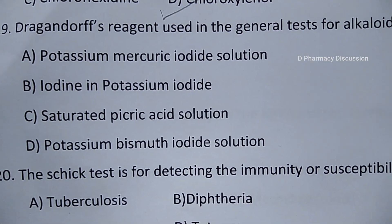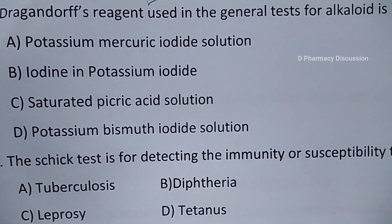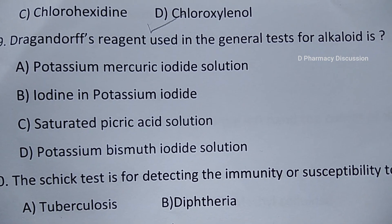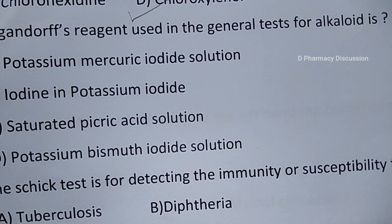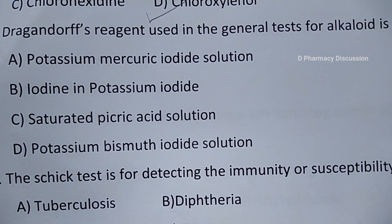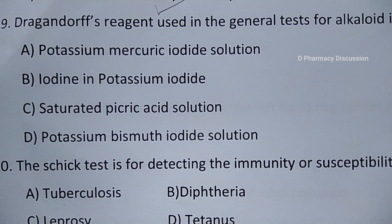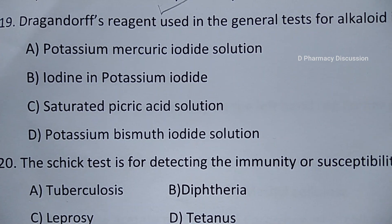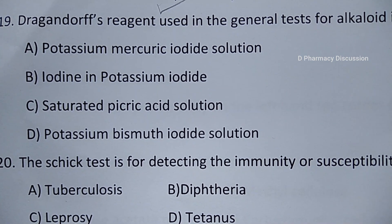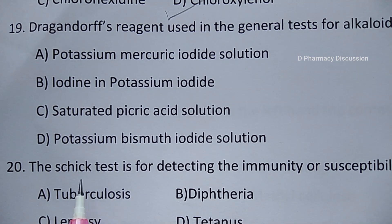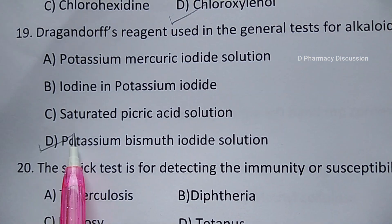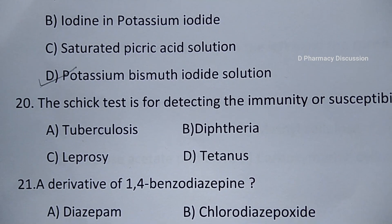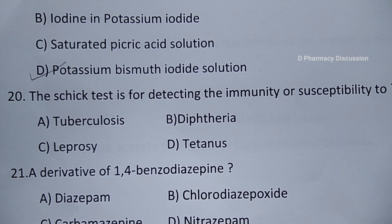Question number 19: Draggendorff reagent used in the general test for alkaloids. Option A. Potassium mercuric iodide solution, B. Iodine in potassium iodide, C. Saturated picric acid solution, and option D. Potassium bismuth iodide solution. Correct answer is option D, potassium bismuth iodide solution.